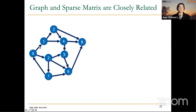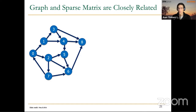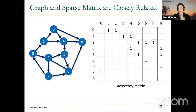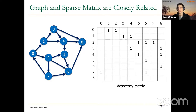We are considering directed edges in this example. If we were using a graph with undirected edges, we could apply the same techniques we are going to explain today — the only difference is that instead of having one adjacency matrix, we may have two adjacency matrices. But let's focus on this specific case.